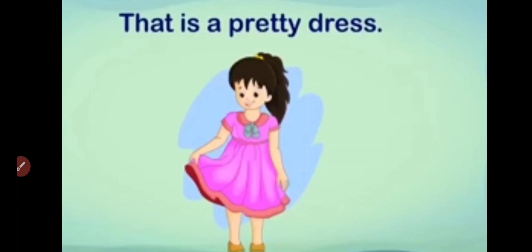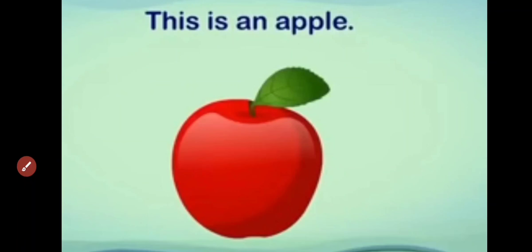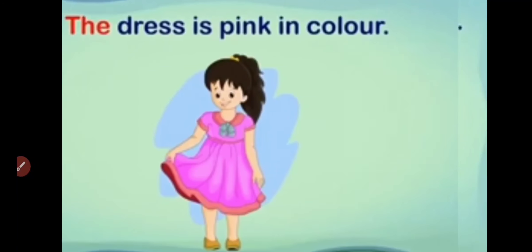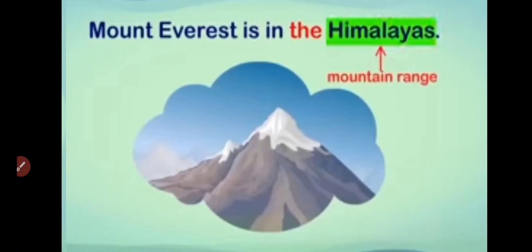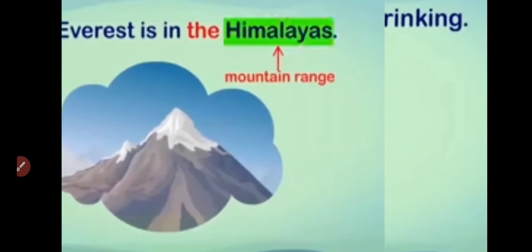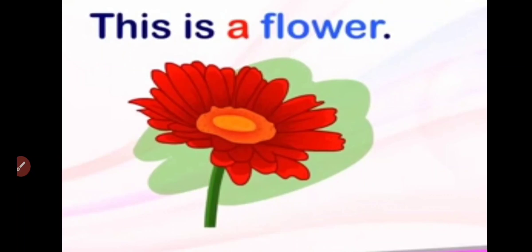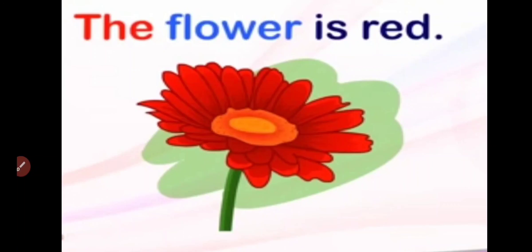Got it? Now let's take more examples. That is a pretty dress. So here I will use a. And this is an apple. The dress is pink in color. So what is a color of dress? It is pink. And which dress? That dress. The dress is pink in the color. The parrots are playing with the ball. Mount Everest is in the Himalayas. Here we have the name of the mountain range, so we will use the. Next, the water is not fit for drinking. And this is a flower. The flower is red. Okay students.